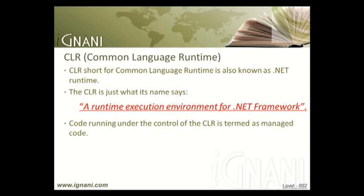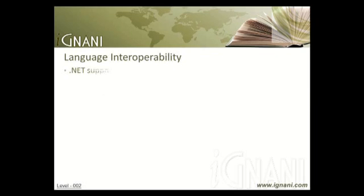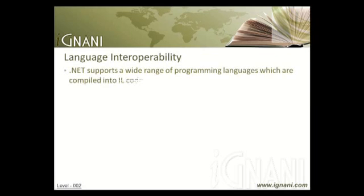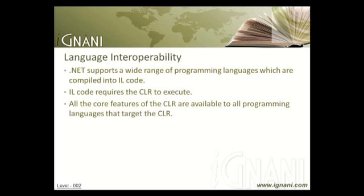Let us now look at some of the features provided by CLR. .NET supports a wide range of programming languages, which are compiled into intermediate language code. The IL code requires CLR to execute. All the core features of the CLR such as memory management, assembly loading, security, exception handling, thread synchronization, etc., are available to all programming languages that target the CLR. In fact, at runtime the CLR cannot know the programming language the developer used, making it easy to develop .NET applications using the programming language of your choice.